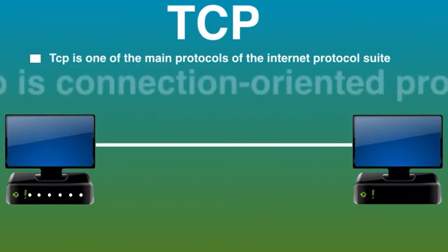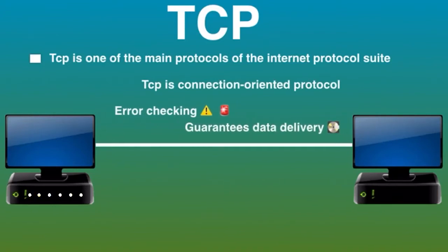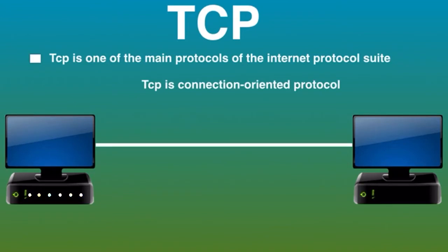TCP is a connection-oriented protocol, as it requires a connection to be established between applications before data transfer. Through flow control and acknowledgement of data, TCP provides extensive error checking. It guarantees that data is received correctly. Without TCP, some data could be missing — if you view a web page without TCP, it could all be messed up.